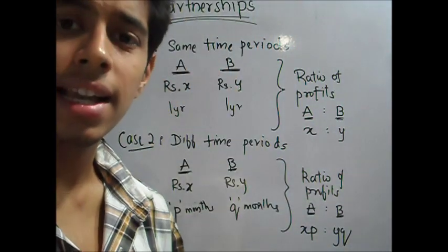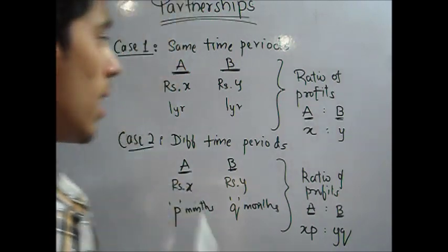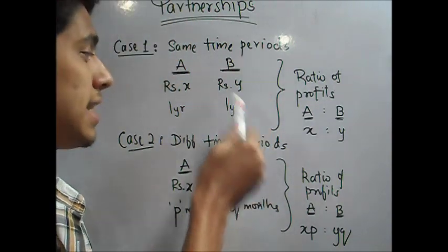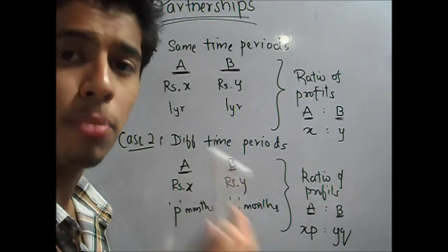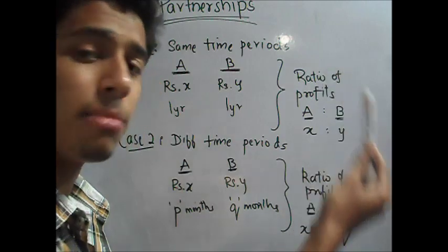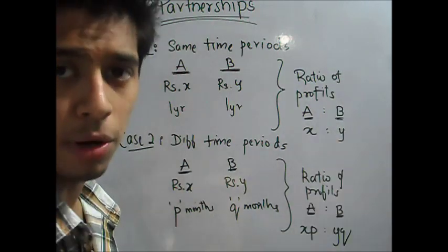Case 1, same time periods. Let us say we have two partners, A and B. A has invested rupees X and B has invested rupees Y for the same time period one year. When you get your profits, they are divided accordingly in the same ratio. A gets X amount of the profit and B gets Y amount of the profit.